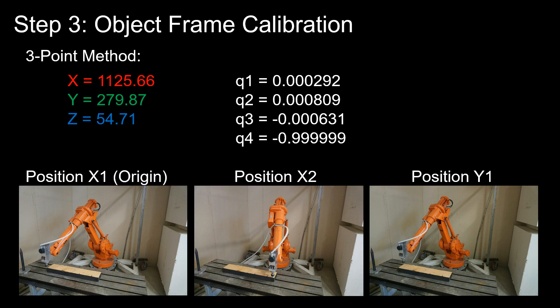And we place the origin at position X1, as shown in the bottom left photo. Position X2 is in the middle. And here, use a long distance, so we've used the entire length of the object to define the X-axis. And the third photo is position Y1, which defines the Y-axis.